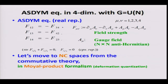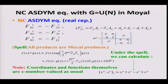Moving to non-commutative spaces from the commutative equation: the procedure is very simple in the Moyal product formalism. We simply require that all products of fields be replaced with the Moyal product. In this equation, there is a product of fields, so this product is replaced with the Moyal product. The product is defined as follows — this looks very complicated, but the detail is not important.